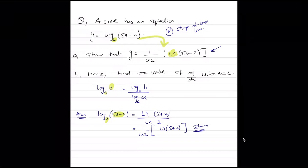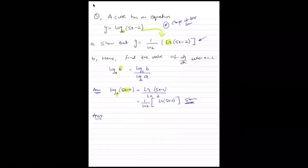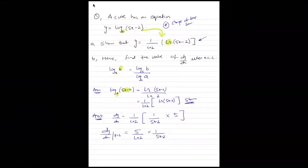For the second part, differentiate 1 over ln 2 times ln of 5x minus 2. Since 1 over ln 2 is a constant, the differentiation of ln of 5x minus 2 is 1 upon 5x minus 2 times 5. Finding the derivative at x equals 2: 5 times 2 is 10, 10 minus 2 is 8, giving 5 over 8 ln 2.